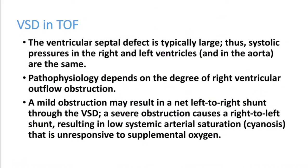In Tetralogy of Fallot, the VSD is large, which is why you don't get murmurs from the VSD itself — the systolic pressures in the right and left ventricles are equal. Mild pulmonary obstruction may result in net left-to-right shunt through the VSD, while severe pulmonary obstruction causes right-to-left shunt with reversal of shunt, leading to early cyanosis. The degree of cyanosis depends entirely on the severity of pulmonary stenosis.